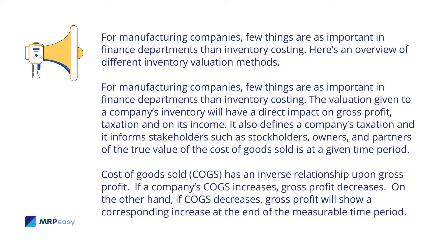Cost of goods sold has an inverse relationship upon gross profit. If a company's cost of goods sold increases, gross profit decreases. On the other hand, if cost of goods sold decreases, gross profit will show a corresponding increase at the end of the measurable time period.